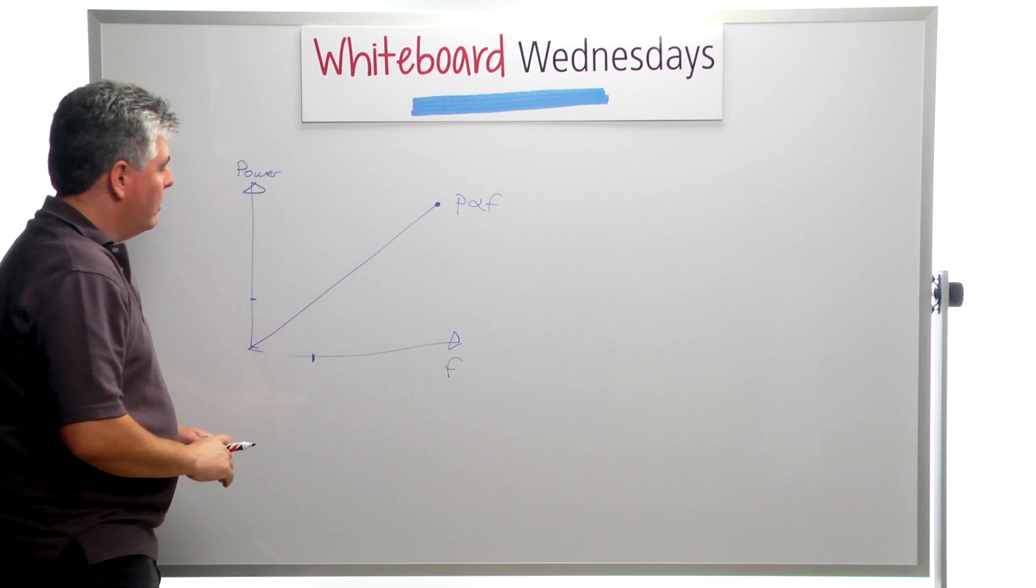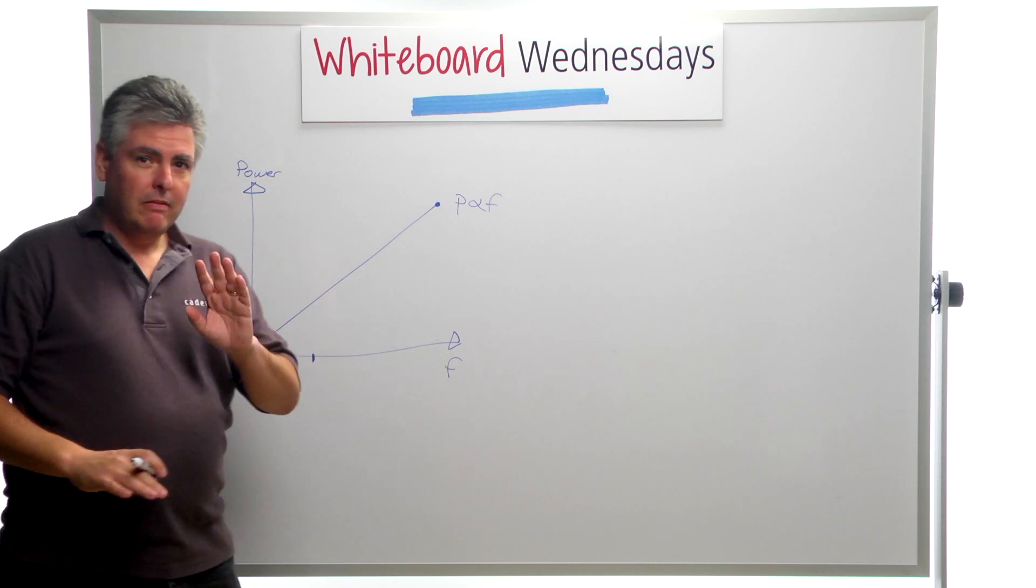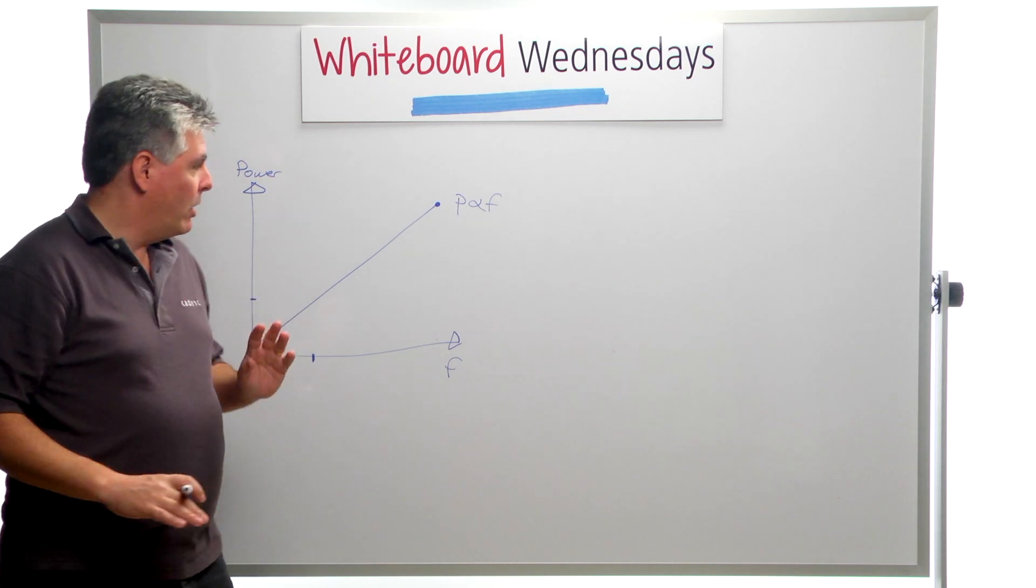So we have to come back to our power is proportional to frequency curve. I'm back to this first assumption: power is proportional to frequency. And again, not 100% true with memory.